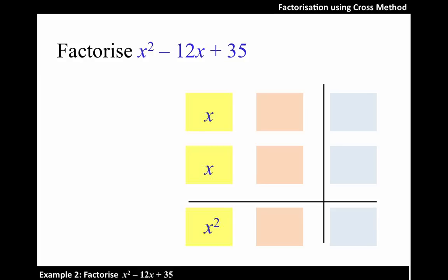Next, let's look at the constant term 35. 35 can be expressed as the product of the following pairs of factors.